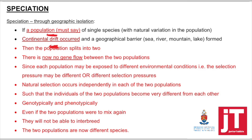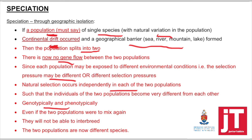Now if you look at your answer — there's your generic answer. We spoke about variation, we spoke about the geographical barrier which was the valley, we said the lizard population split into two, we had to mention gene flow, then you mentioned natural selection took place independently, and then you mentioned they became so different from each other genotypically and phenotypically and will not be able to interbreed — they've become two different lizard populations.